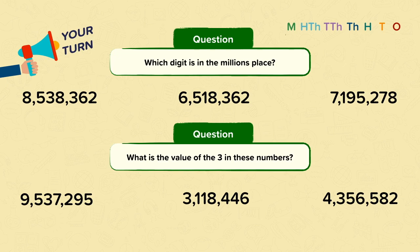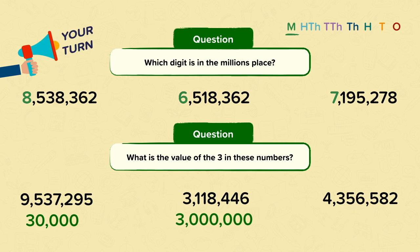Now let's check the answers. For the first question, you needed to look at the millions place to find the correct digits. Well done if you said that 8 is in the millions place in 8,538,362; 6 is in the millions place in 6,518,362; and 7 is in the millions place in 7,195,278. For the second question, you needed to find the digit 3 in each number and look at its place value to determine its value. The 3 in 9,537,295 is in the 10,000 place, so the value of the 3 is 30,000. The 3 in 3,118,446 is in the millions place, so the value of the 3 is 3 million. Finally, the 3 in 4,356,582 is in the 100,000 place, so the value of the 3 is 300,000.